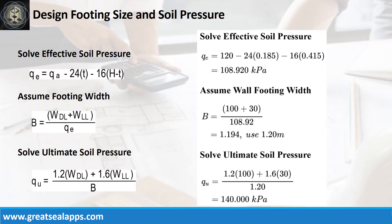Given allowable soil pressure equals 120kPa, depth from natural grade line equals 600mm and assumed footing depth equals 185mm.